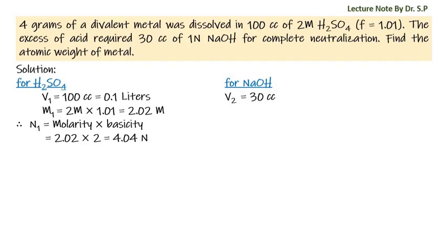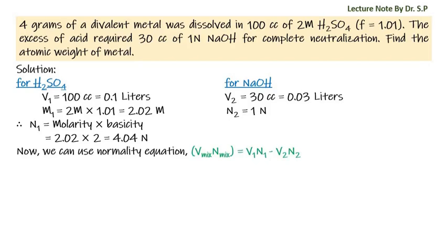Similarly for sodium hydroxide: given volume V2 is equal to 30 cc, that is equal to 0.03 liters, and given normality of sodium hydroxide is 1N. Now we can use the normality equation: V_mixture × N_mixture = V1·N1 − V2·N2.